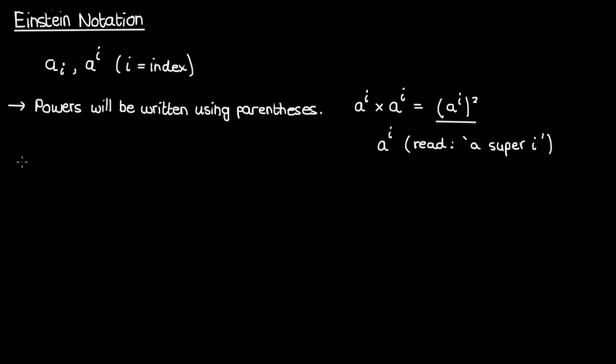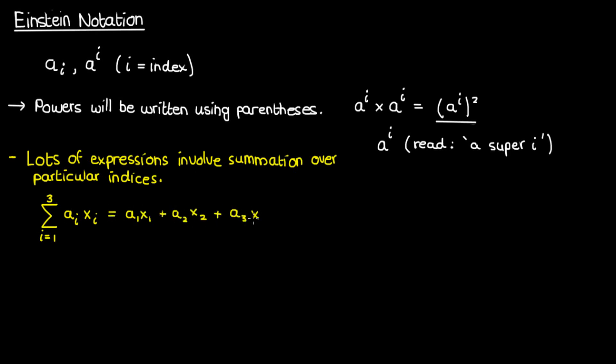Let's move on from basic indexing to more involved topics. In tensor calculus, a lot of expressions will involve summation over particular indices. This means you'll see lots of expressions like this, where I have the sum from i equals 1 to i equals 3 of a sub i times x sub i. This is, of course, just a1x1 plus a2x2 plus a3x3. In Einstein notation, when we write summations like these, we don't use the sigma symbol, we just write a sub i times x sub i.